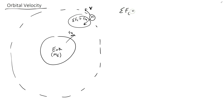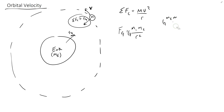A centripetal force is always equal to the mass of the thing going in a circle times the velocity squared divided by the radius — mv²/r. The force of gravity is the mass of thing one times the mass of thing two over r² times the gravitational constant. We can set these two equations equal to each other. With the Moon and the Earth, we say: G times the mass of the Earth times the mass of the Moon divided by r² equals m times v² over r.